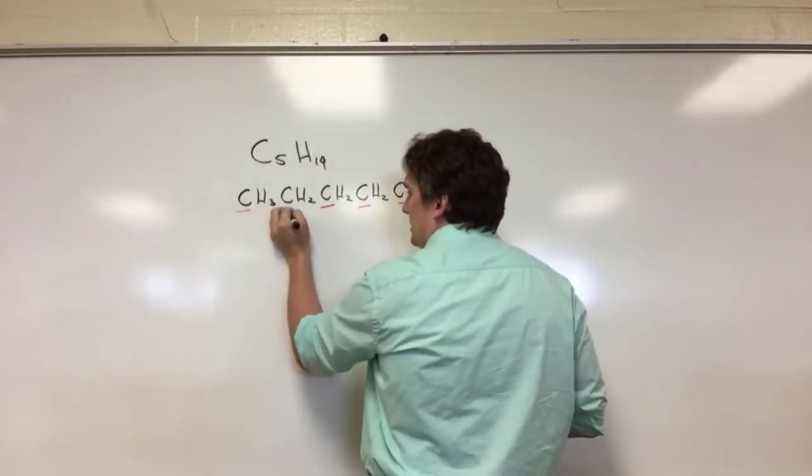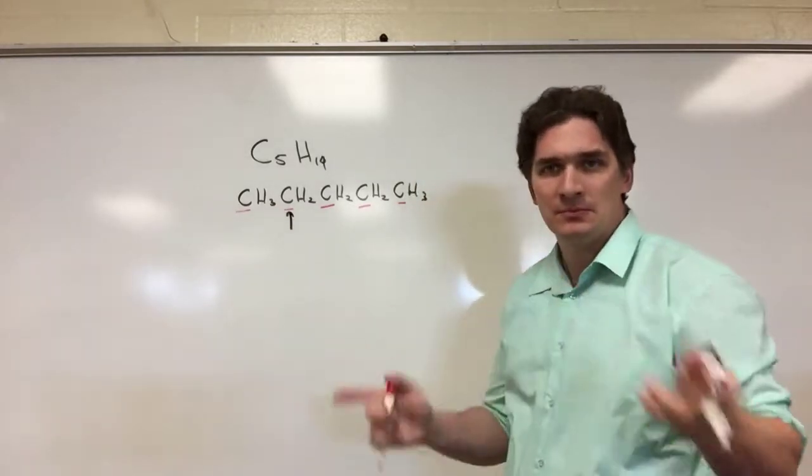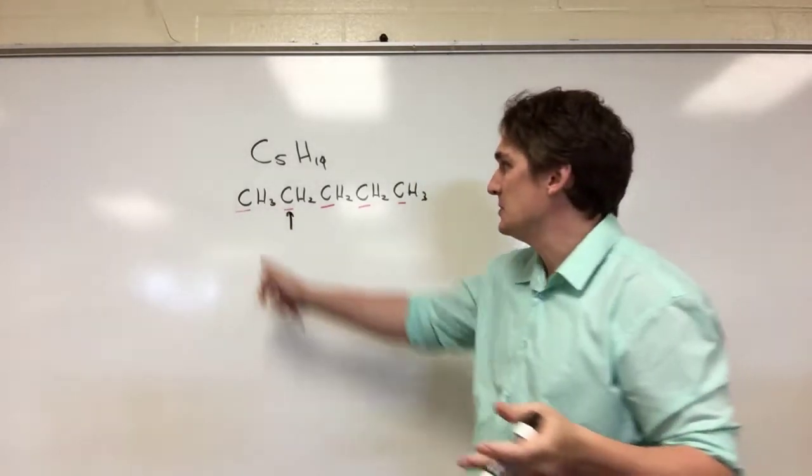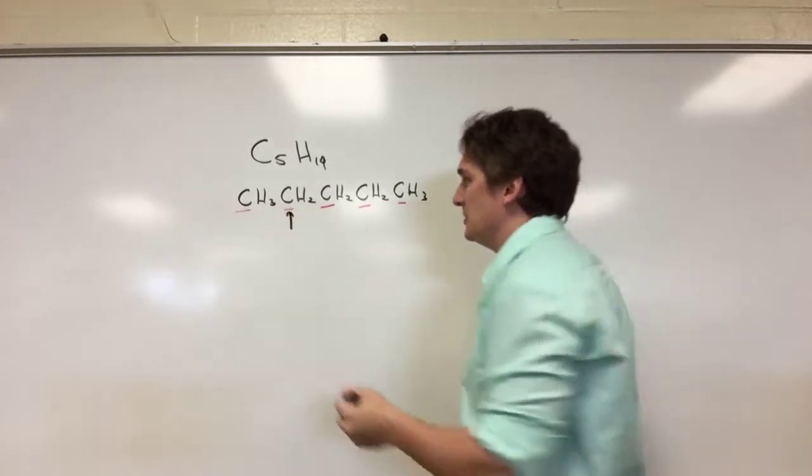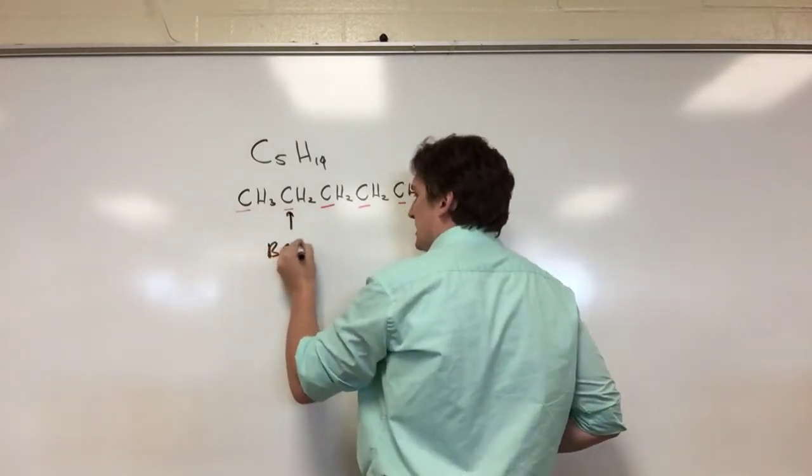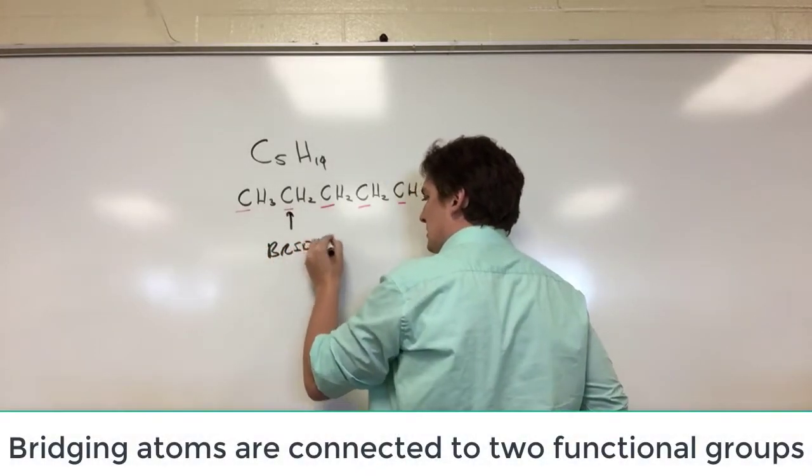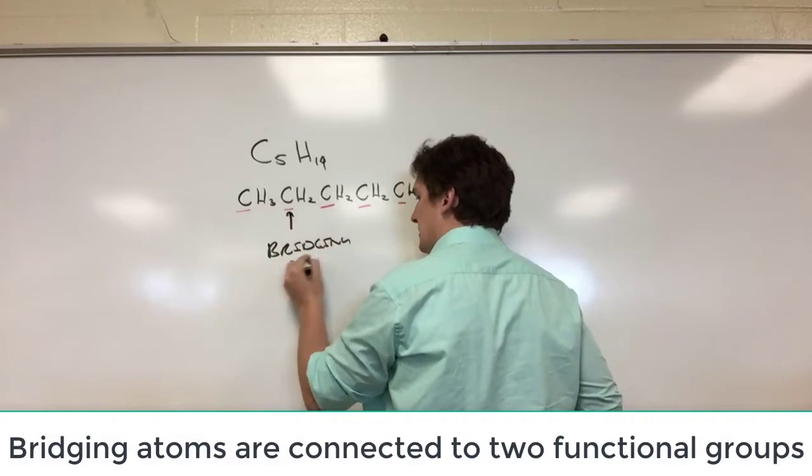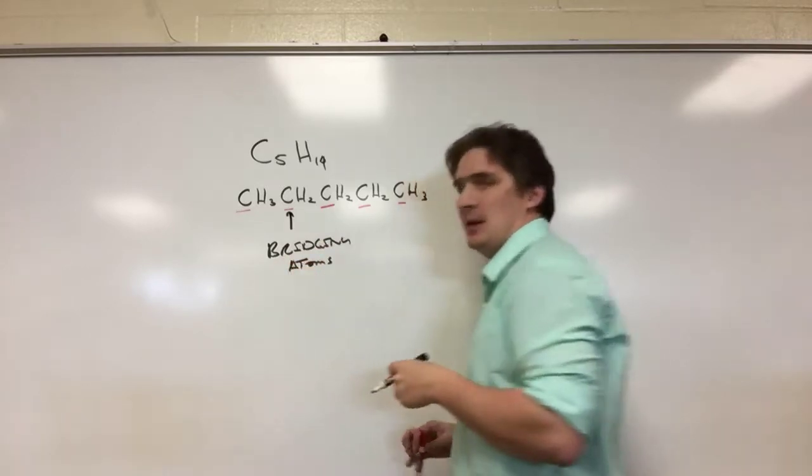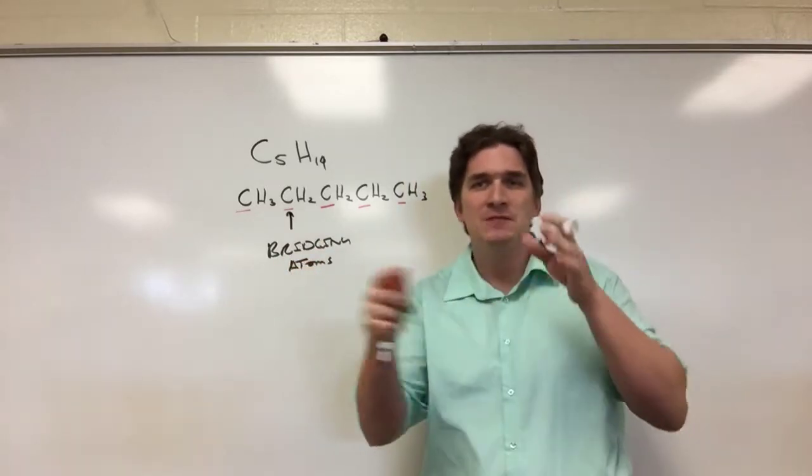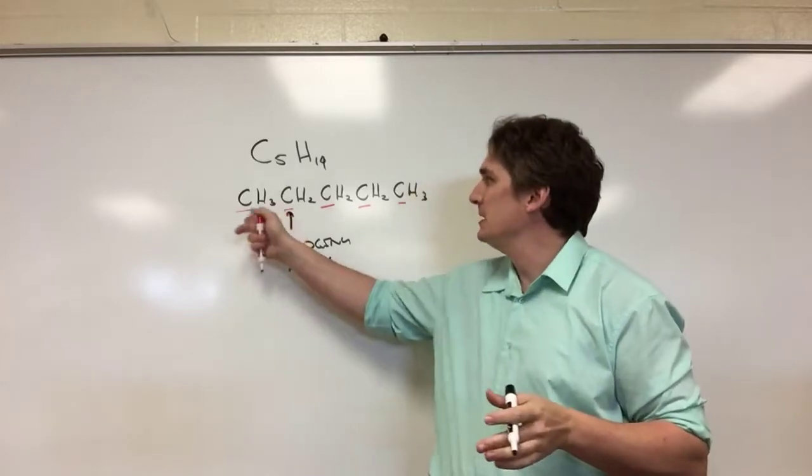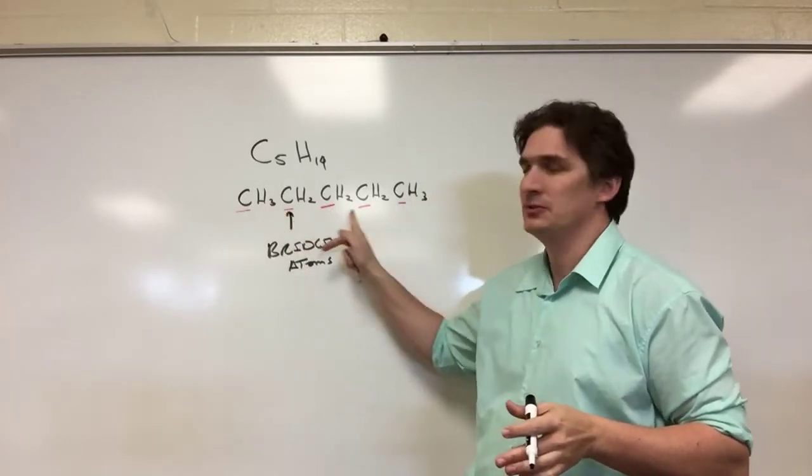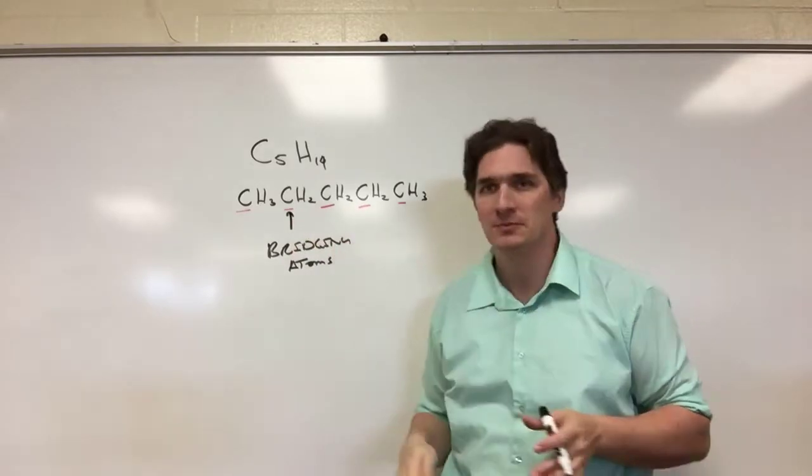Now, the carbons that are connected to more than one atom that's also a central atom, so this is a central, this is a central, this is a central, are called bridging atoms. And we call them bridging atoms because they bridge functional groups. So this carbon connects these two functional groups, this carbon connects these two functional groups, this carbon connects these two functional groups.